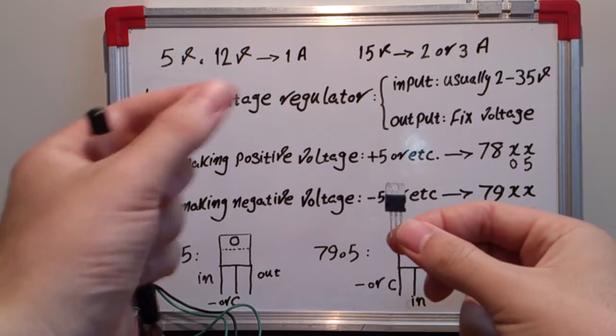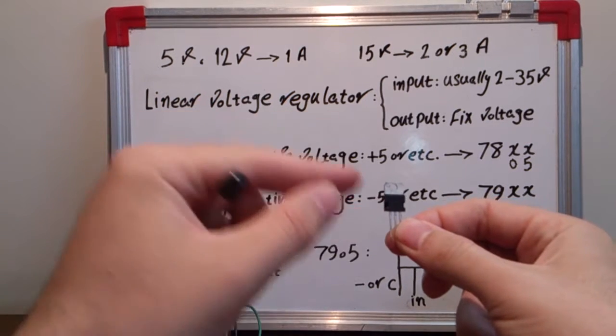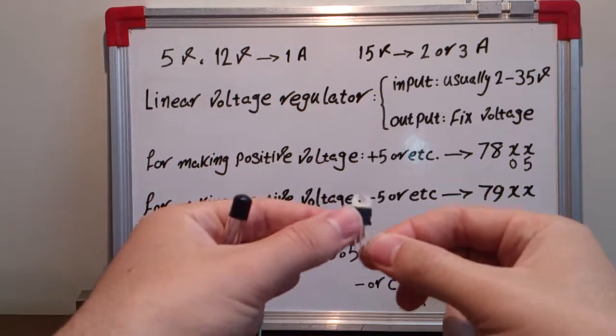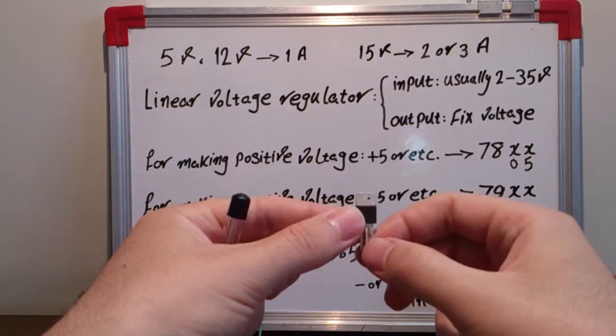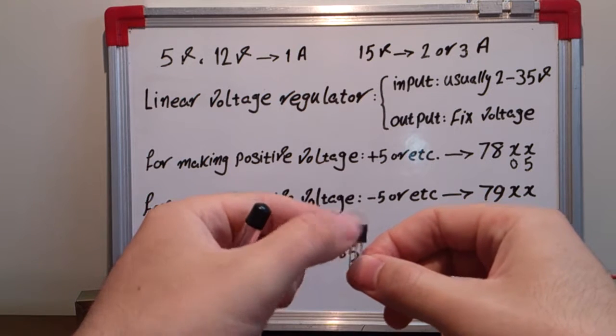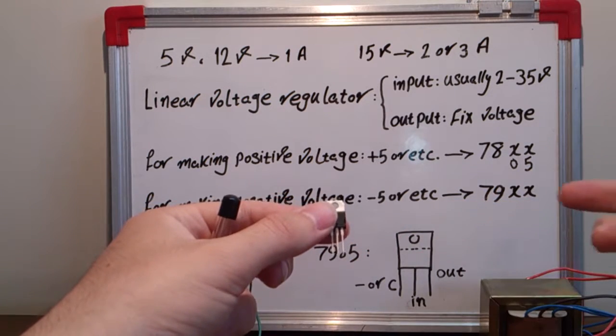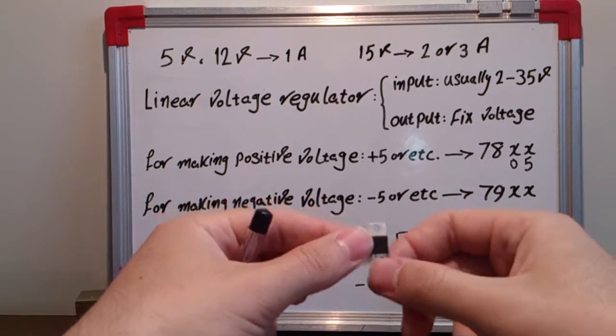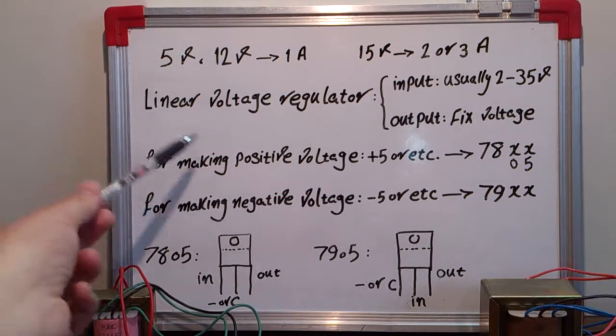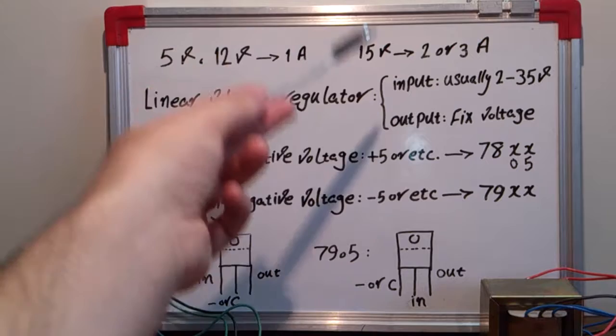If I change the input voltage, the output voltage remains 5 volts. If I change my input voltage to 20 volts, the output voltage remains 5 volts.